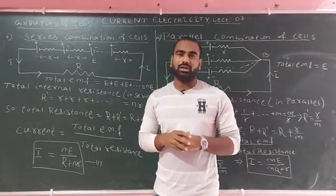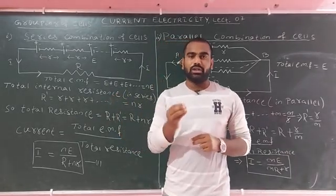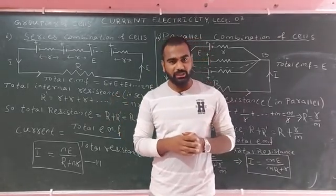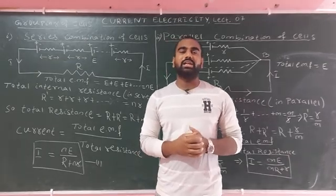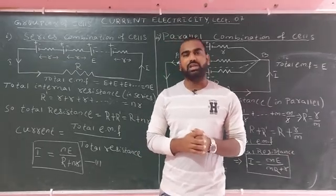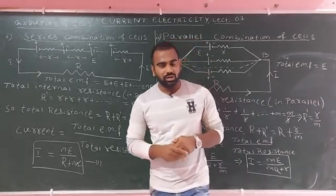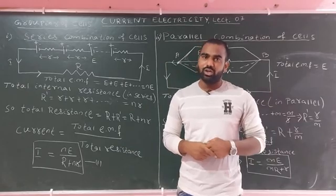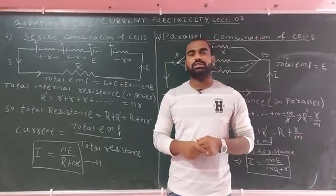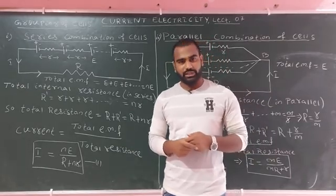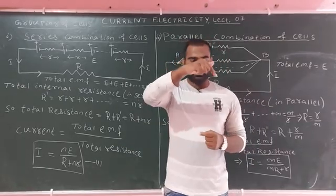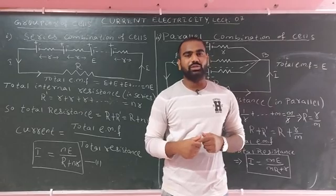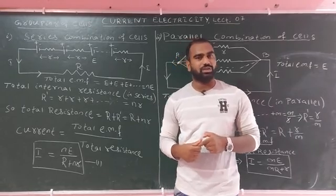Each cell has EMF denoted by E and internal resistance denoted by R. I already covered EMF and internal resistance in lecture number 6 — there is a link in the description box if you want to know about EMF and internal resistance.